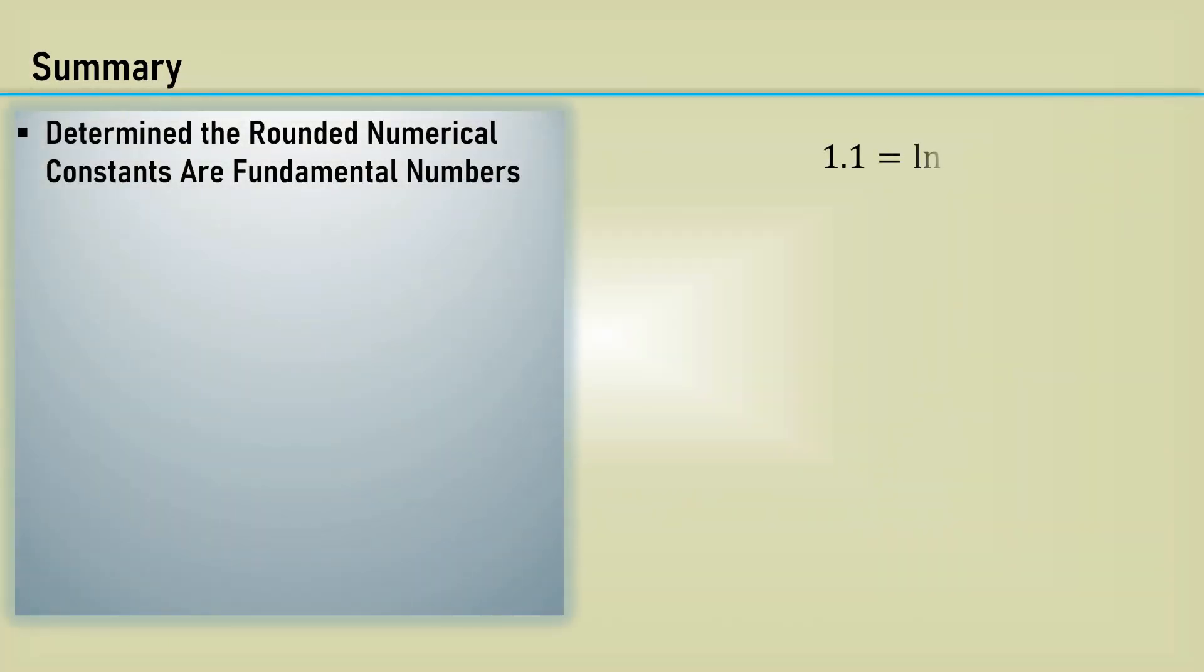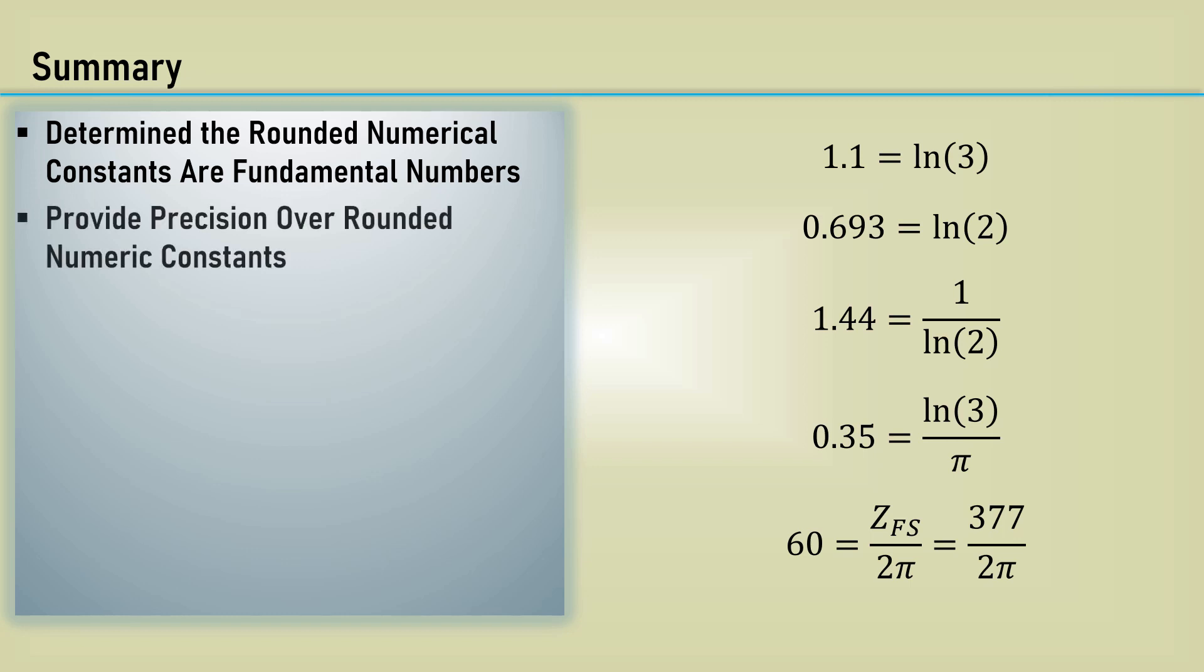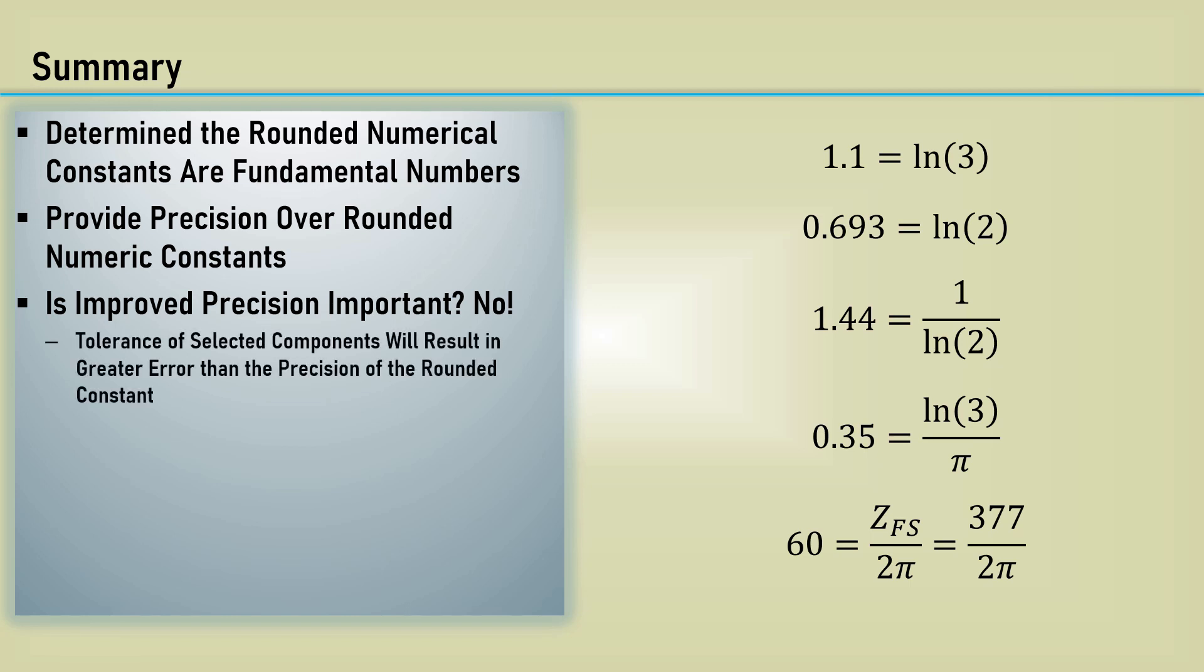In summary, we determined that the rounded numerical constants we analyzed came from fundamental numbers like the natural log of an integer or a collection of physical constants. If used in their prime form, like the natural log of the integer, you can have very good precision. Is the improved precision important? Well, no, not so much. For instance, the tolerance of selected components will result in a greater error than the given precision of the rounded constant.